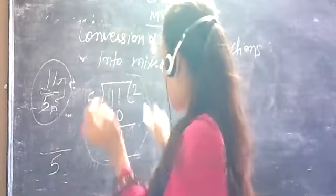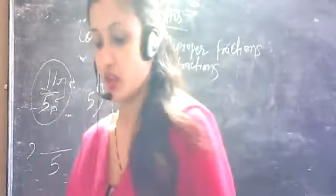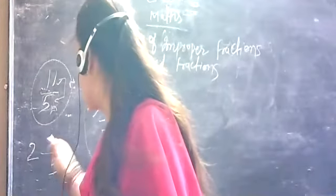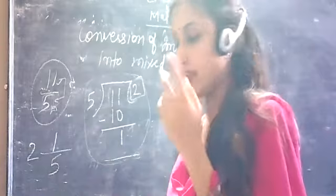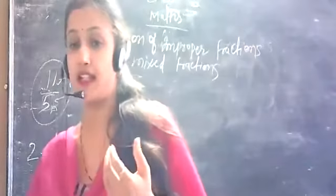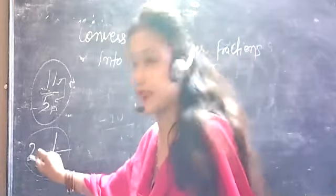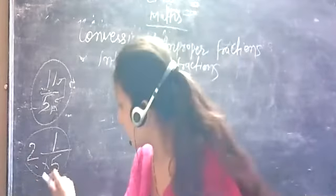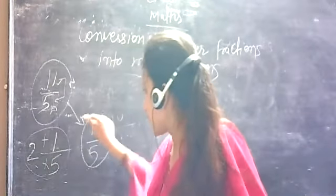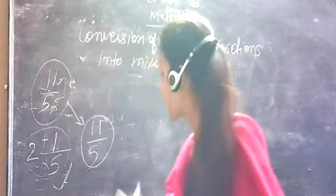The quotient is written here, and this is our mixed fraction. We will check that our fraction is correct or not. We will multiply 5 by 2 — multiply 5 by the whole number — and then add. If the answer comes back as 11, that means the fraction is correct.